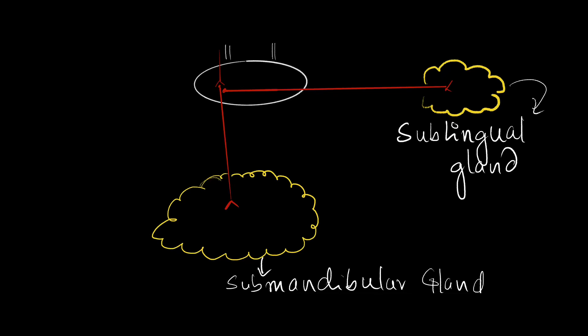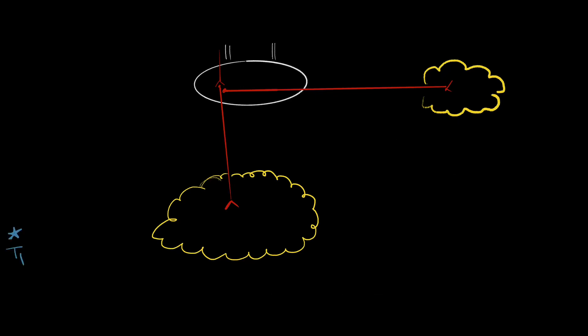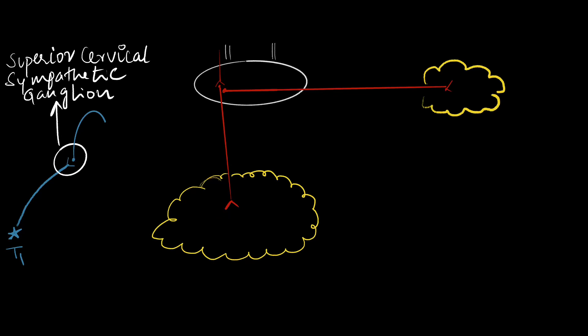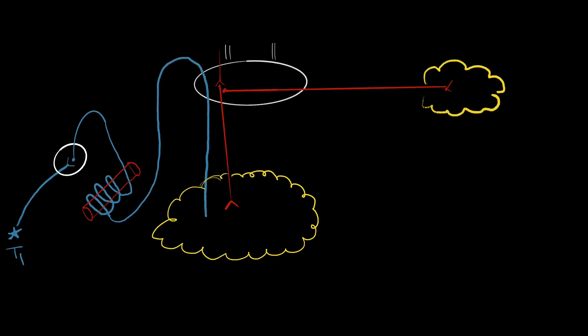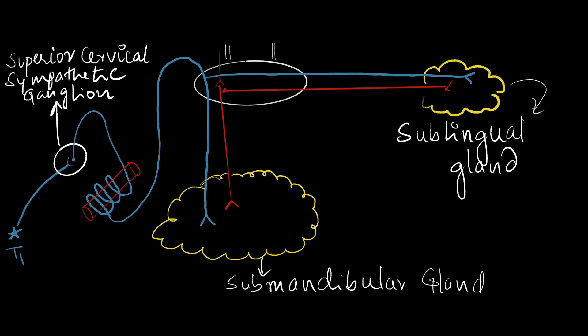In addition to the parasympathetic route, the submandibular ganglion also has sympathetic and sensory routes. The pre-ganglionic sympathetic fibers arise in the T1 spinal segment and relay in the superior cervical sympathetic chain. The post-ganglionic fibers form a plexus around the facial artery and, without relaying in the submandibular ganglion, supply the blood vessels in the submandibular and sublingual glands. The sensory route is via the lingual nerve.